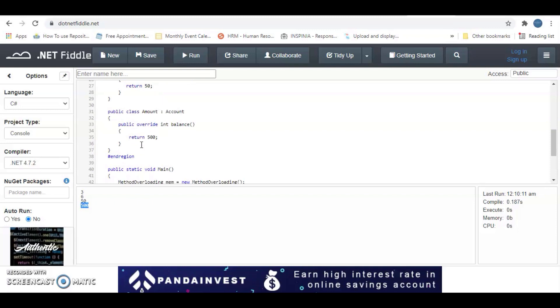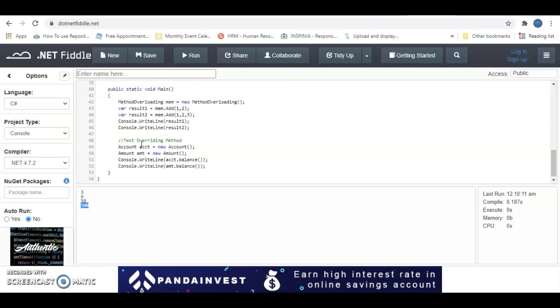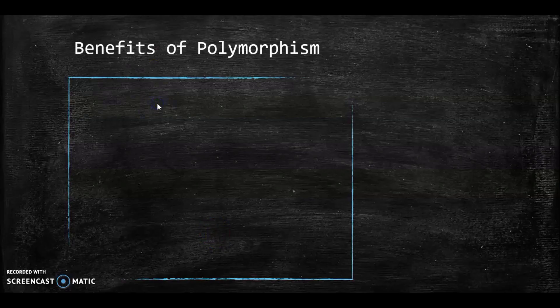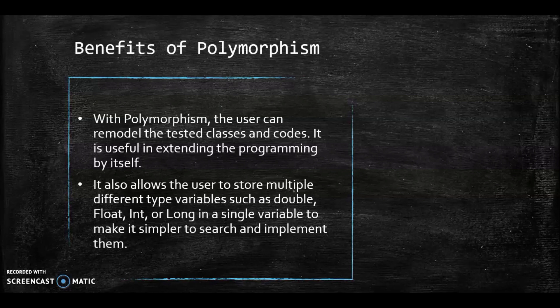What are the benefits of polymorphism? With polymorphism, the user can reuse tested classes and code. It is useful in structuring programming by itself. It also allows the user to store multiple different types of variables such as double, float, int, or long in a single variable, making it simpler to search and implement. If you enjoyed this video, please kindly like and subscribe. Thank you.